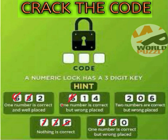Here we can see that one number is correct but in the wrong place. So two is the right number and is well placed. We can write down that the third code digit is two.